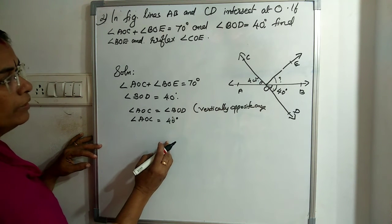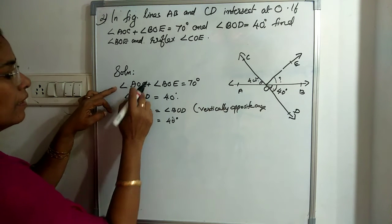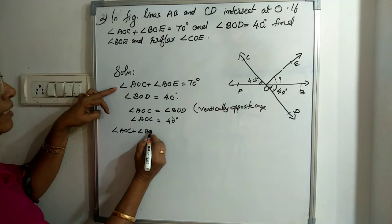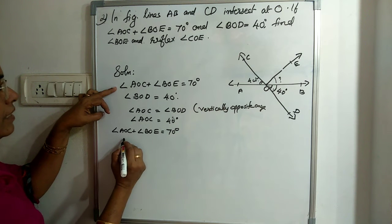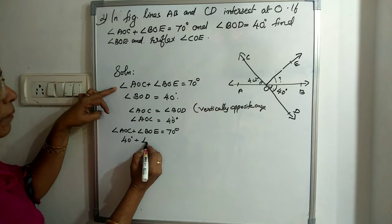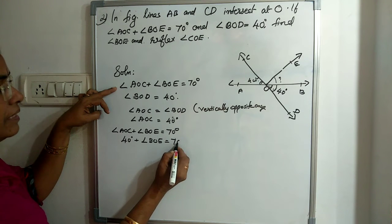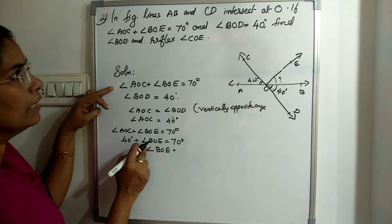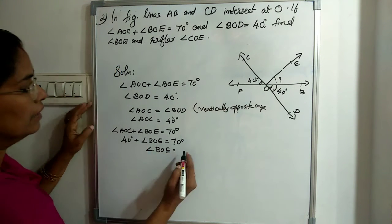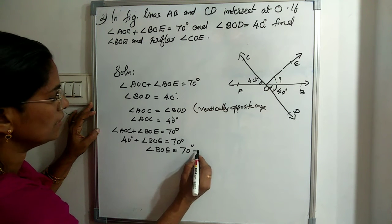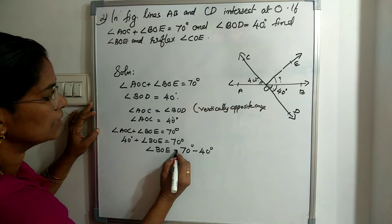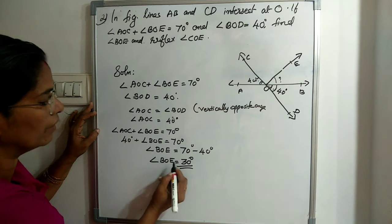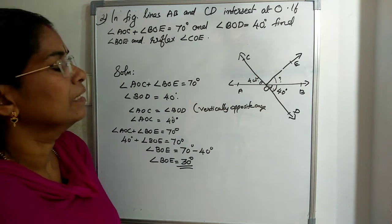Since angle AOC equals 40 degrees, we substitute into the given equation: angle AOC plus angle BOE equals 70 degrees. Therefore, angle BOE equals 70 minus 40 equals 30 degrees. We have found one angle: angle BOE equals 30 degrees.